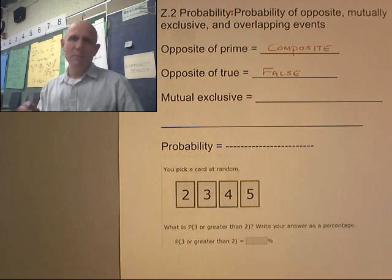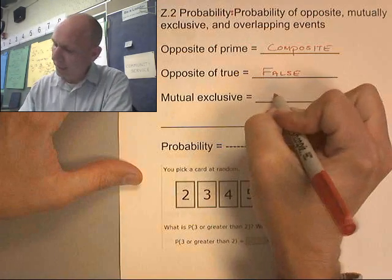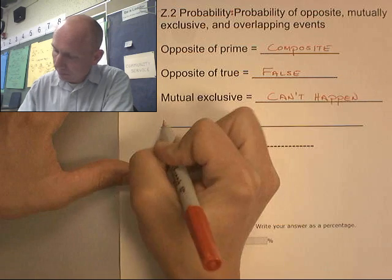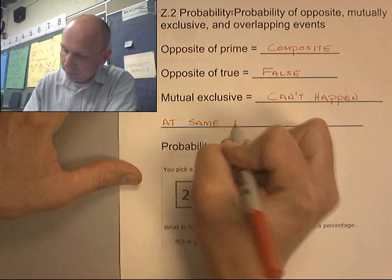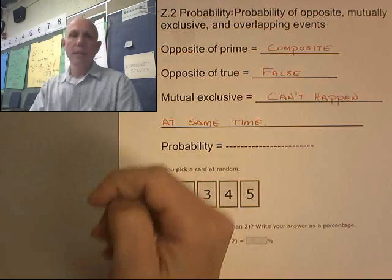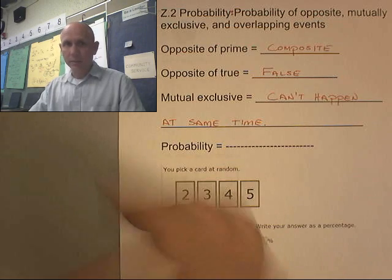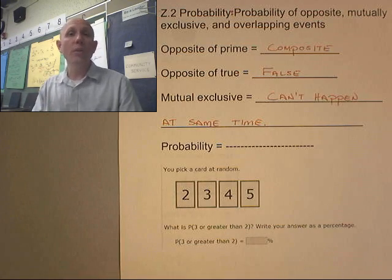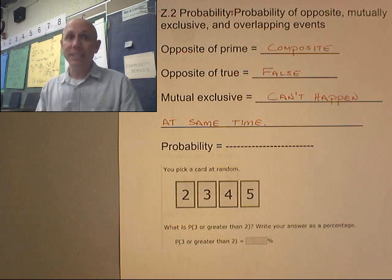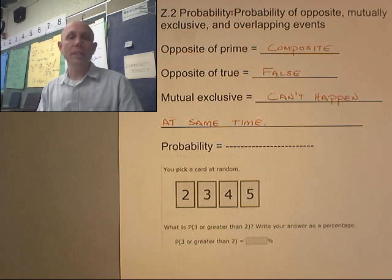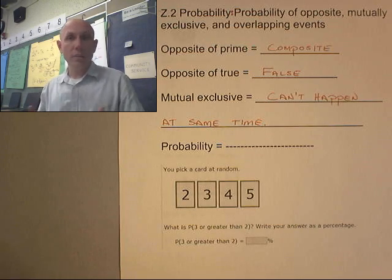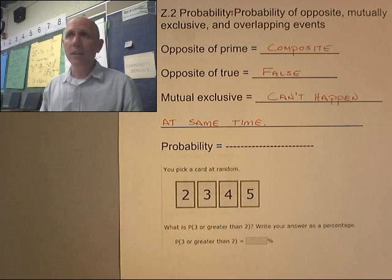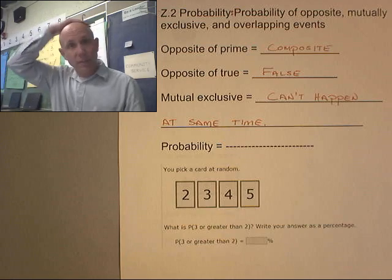Mutually exclusive means that it can't happen at the same time. If I flip a coin, can I flip heads and tails at the exact same time? No, it's either gonna be one or the other. If I roll a die, can I roll a one and a six at the exact same time? No. Can I turn right and left at the exact same time? No. Those are mutually exclusive events.